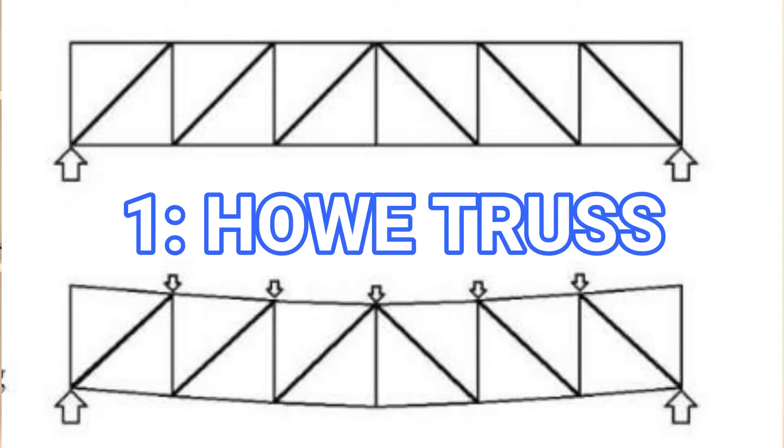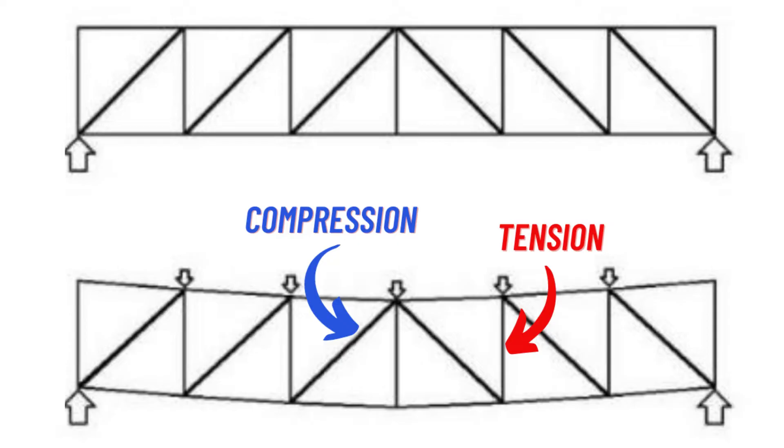First up, the Howe truss by William Howe — a classic truss type that was used regularly for bridges in the 1830s and 1840s. The only disadvantage is that the compressive elements are the longer ones, which means they're more likely to buckle, and that limited the length of span this could be used for.